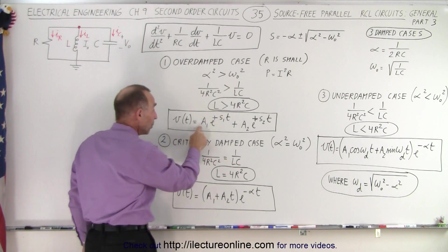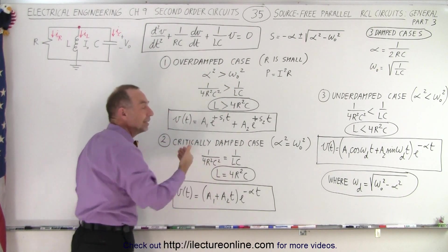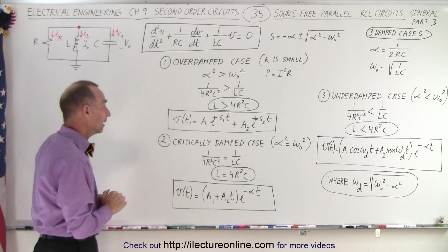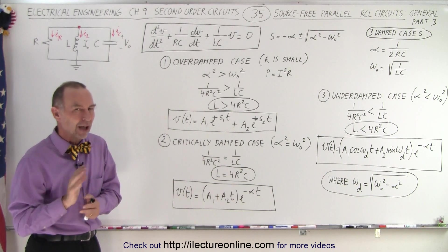Now how do we find the constants A1 and A2? Well for that we'll need the initial conditions of the current and the voltage, or some sort of combination, in order to calculate that. And we'll show you some examples of how to do that.